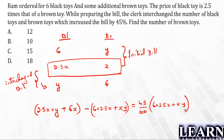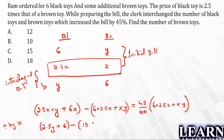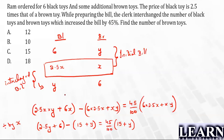Notice that x is common throughout. We have 2.5x + 6x on one side and x terms on the other — we can cancel out x from both sides. After dividing by x, we get: 2.5y + 6 − (6 × 2.5 + y) = 45% of (15 + y). Note that 6 × 2.5 = 15, so this simplifies to 2.5y + 6 − 15 − y = 45% of (15 + y).